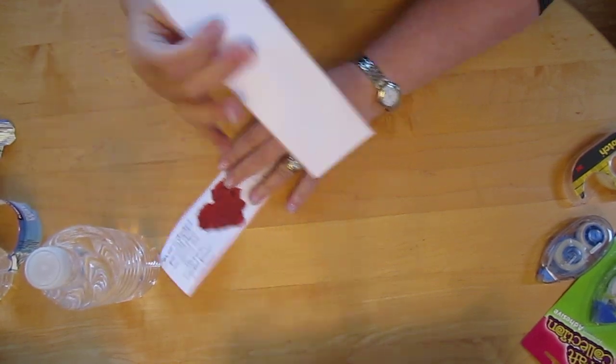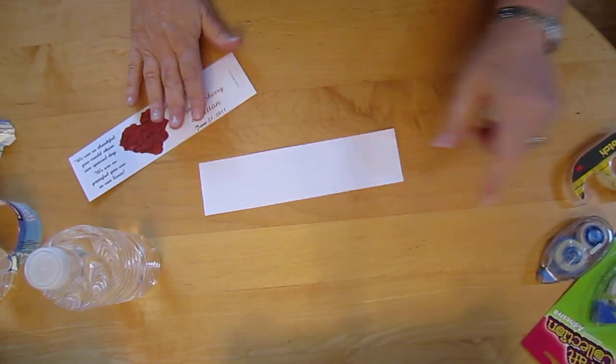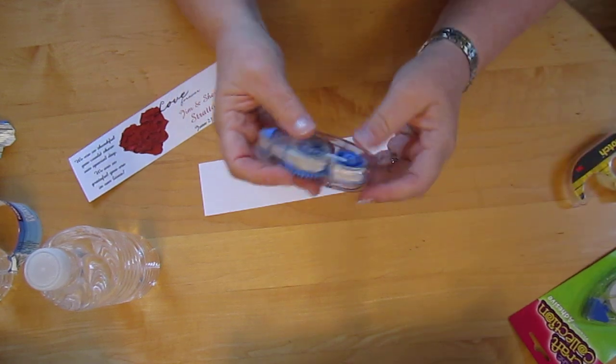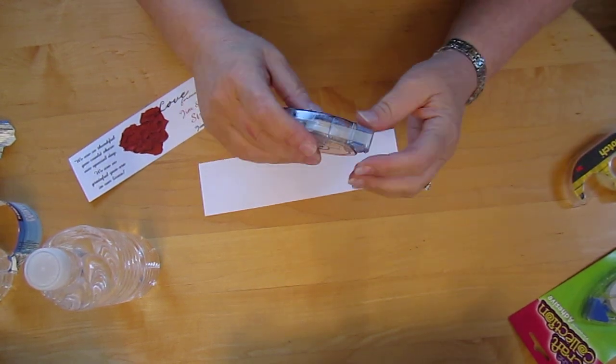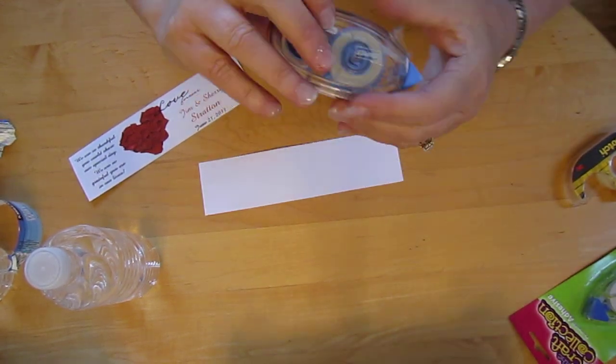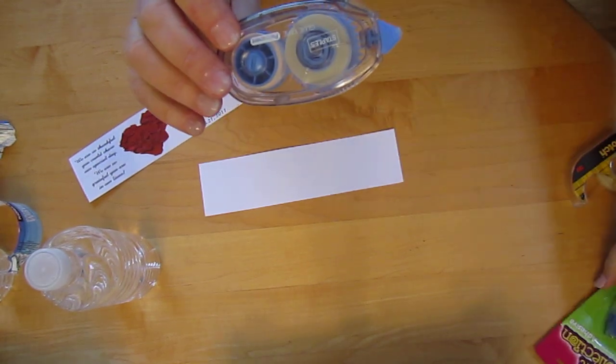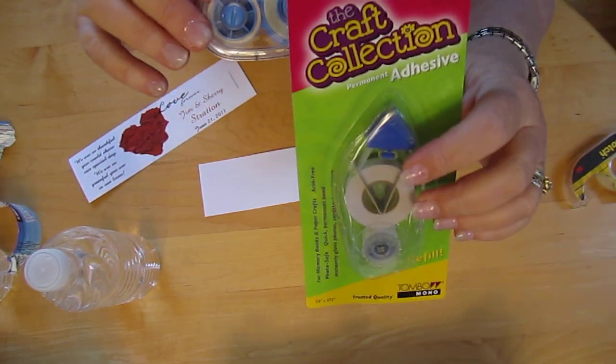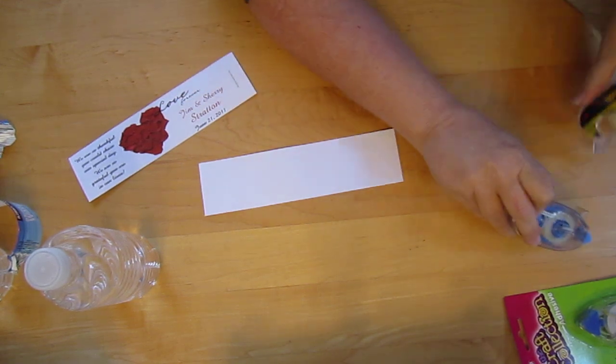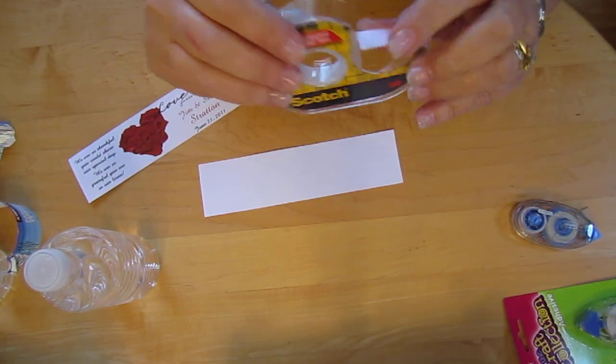Then I take my label. On the back side I either use the tape that's a roll-on tape. This is one brand. This is another brand. Or I use double-sided tape.